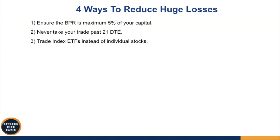The third thing to do is to trade index ETFs instead of individual stocks. You can continuously put on strangles because there are no earnings events. Secondly, you do not get exposed to individual stock news — when a company releases sudden news, it can really affect prices. For example, Google released an AI and there was a mistake in one of the answers, and all of a sudden the stock started to tank. So if you want more consistency in your results, especially with undefined risk strategies, go more with index ETFs.